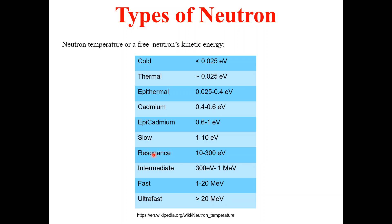Resonance neutrons are those neutrons which have energy in the range of 0.6 to 300 electron volts. Fast neutrons are those neutrons which have energy in the range of 1 to 20 mega electron volts. Finally, ultra-fast neutrons are those neutrons which have energy in the range of 20 mega electron volts and above.